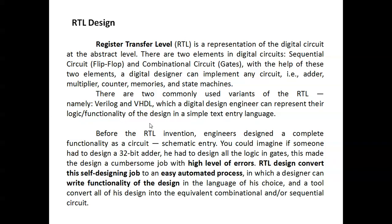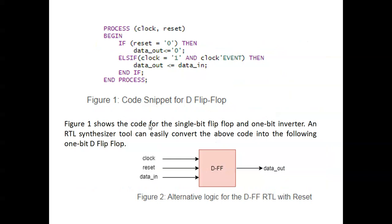Using text entry, we can write a basic D flip-flop with inputs: clock, reset, and data in, and output: data out. If the clock is low, there is no output. If the clock is high, whatever is at the data input is what you get at the output. In the code, the process includes clock and reset signals with a begin block.